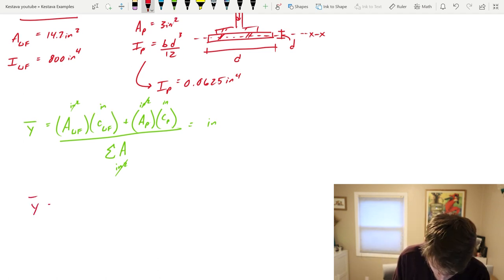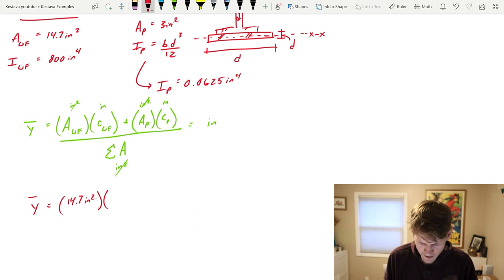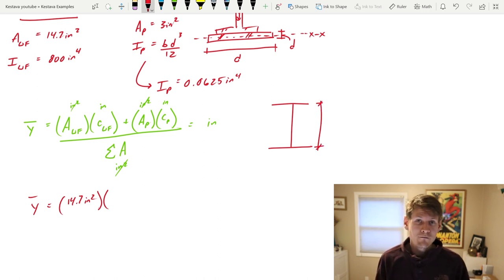Y bar equals the following: 14.7 inches squared, we know that for the area of the wide flange. Well what's the c of the wide flange? You go to your steel manual, you need to know the height of your wide flange. This is a W18 by 50. That means it's going to be very close to 18 inches tall. In our instance it is exactly 18 inches tall.